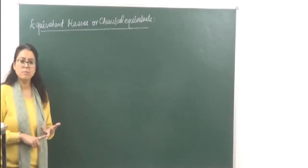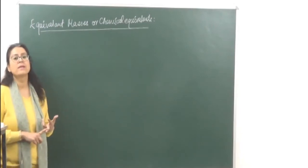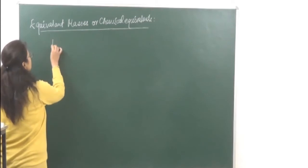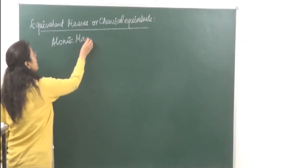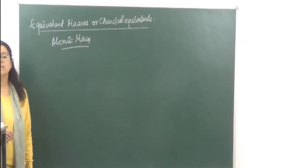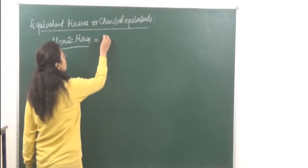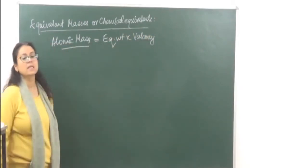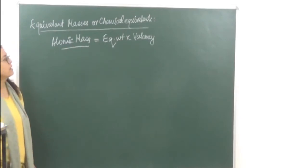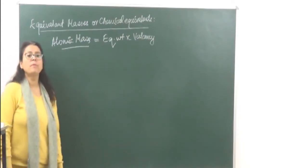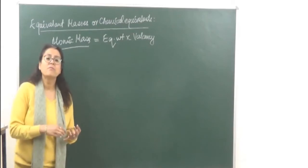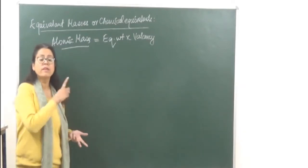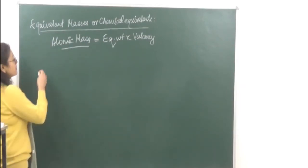Today we are going to discuss different methods and in every method we will see which questions are possible. One major importance is that equivalent mass helps us calculate the atomic mass. Atomic mass is equal to equivalent weight into valency. So both formulas — how we calculate equivalent mass, then how we calculate atomic mass from it, and how we predict the molecular formula from atomic mass — all of that we are going to do today.